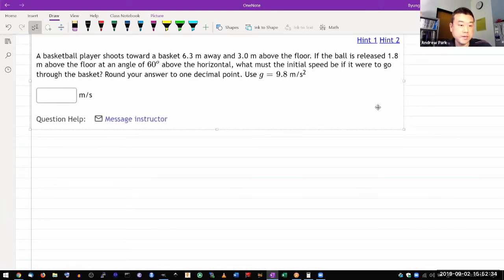So it says a basketball player shoots towards a basket, some distance away and some height above the floor. I am going to assume that this distance given is distance away horizontally only. Otherwise, it looks super difficult.